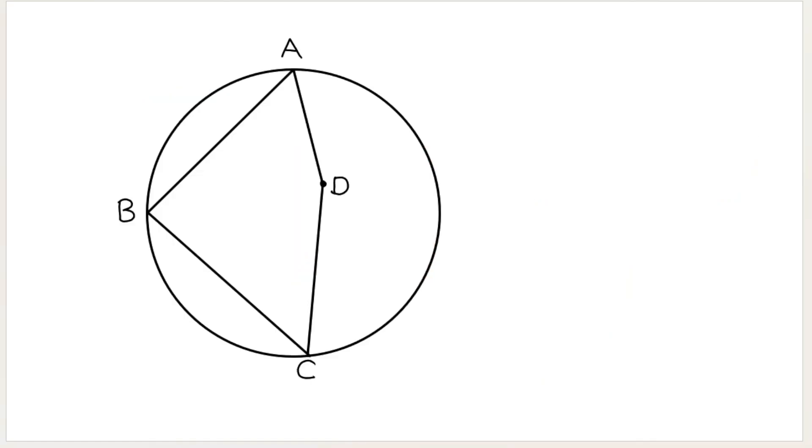Now, just ask yourself for a second, is this a cyclic quad? I hope that you are saying no, it's not a cyclic quad. Why is it not a cyclic quad? Because sure, A is lying on the circumference, B is lying on the circumference, and so is C, but D is not. So it is not a cyclic quad. And so the theorems that I'm going to be teaching you in this video and in the next one, they will not apply.